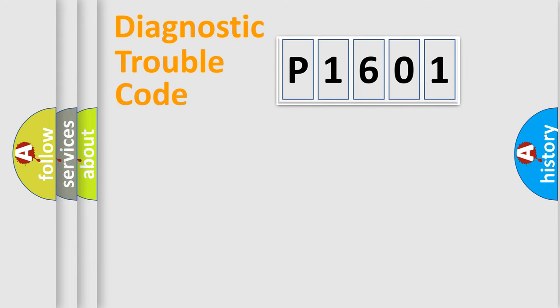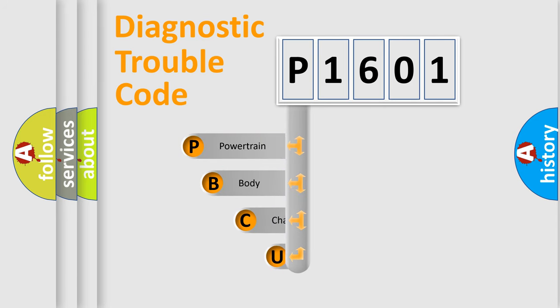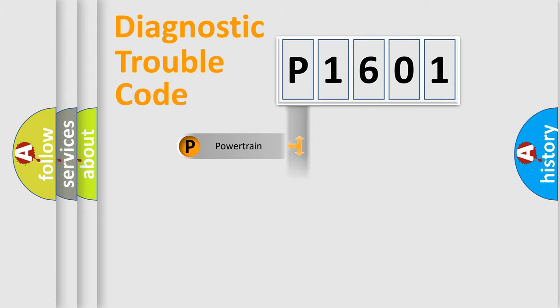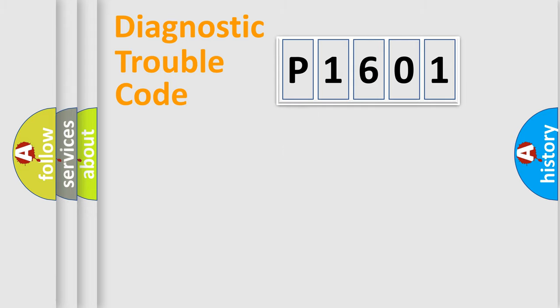Let's do this. First, let's look at the history of diagnostic fault code composition according to the OBD2 protocol, which is unified for all automakers since 2000. We divide the electric system of an automobile into four basic units: Powertrain, body, chassis, network.